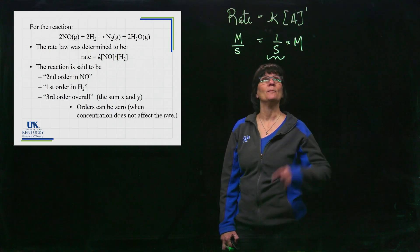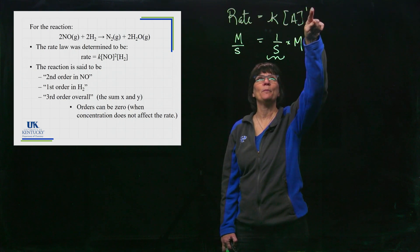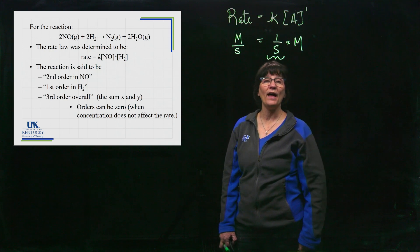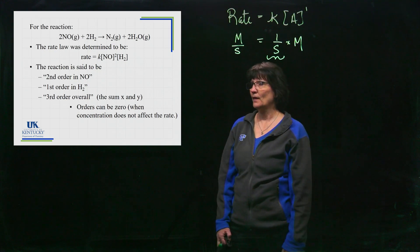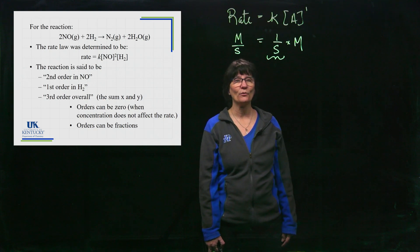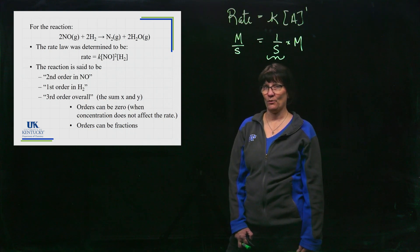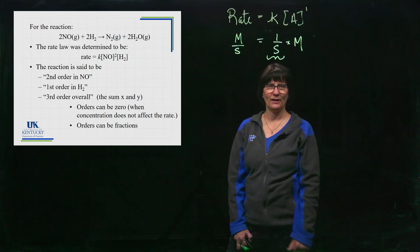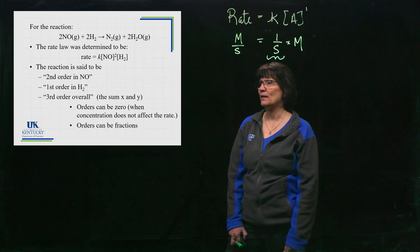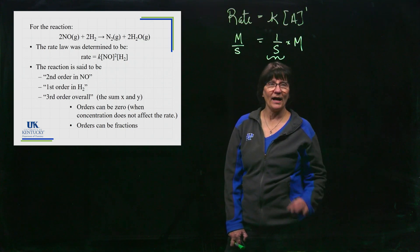You can also have zero order — anything raised to the zero power is one, meaning that substance's concentration does not affect the rate. You can also have fractional powers, and I've even seen negative numbers for powers, which is very bizarre. It doesn't happen often, but it does occur. Usually they're nice whole numbers, but they don't have to be.